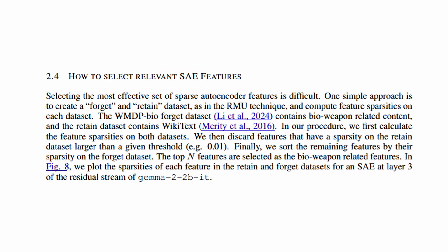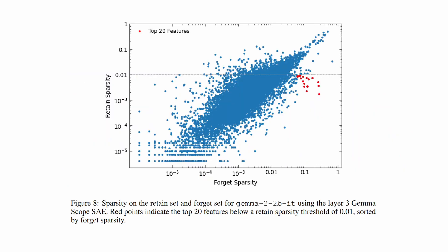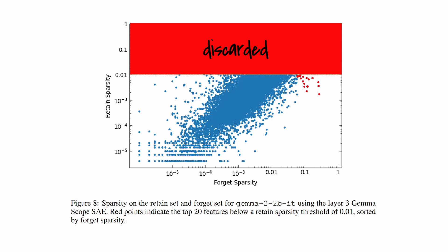How do we know which specific features of the SAE relate to biology? The authors do something clever: they take a retained dataset containing general knowledge and a forget dataset containing the specific knowledge they want to unlearn. They then pass these datasets through the model and record how often each feature of their SAE fires on each respective dataset. Their goal is to find features that activate as few times as possible on the general knowledge dataset while activating as much as possible on the forget dataset. So they discard all features above a certain threshold's sparsity on retain and take the top activating features on the forget dataset.